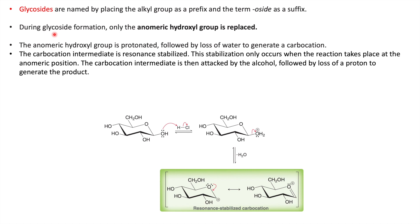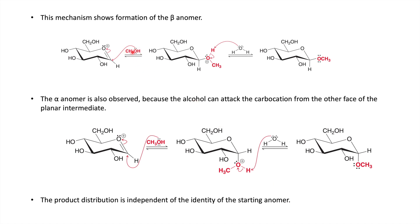Glycoside formation occurs only at the anomeric carbon, where the anomeric hydroxyl group is replaced. In glucose, when you treat it with acid, the hydroxyl group gets protonated and leaves as water, giving a carbocation. This carbocation is resonance-stabilized. Methanol then attacks this intermediate from the front side, giving the methyl glycoside product, which is the beta-anomer.